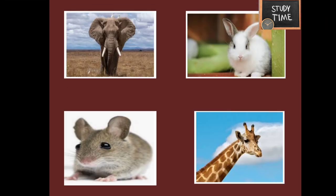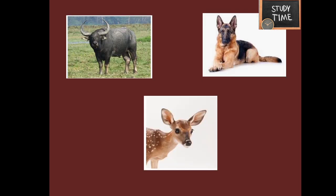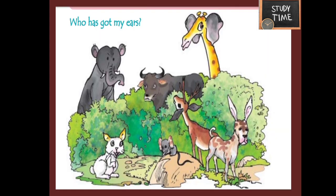Observe the animals carefully in this picture. The elephant has got big ears and it can move its ears forward and backward. The rabbit has got small ears, and the mouse also has small ears. The giraffe's ears are small when compared to its big structure. The buffalo has ears on its side, and the dog has ears on top of its head. The ears of these animals are different from others.